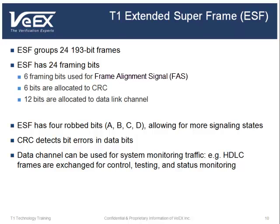For example, HDLC frames, or high-level data link control frames, are exchanged for control, testing, and status monitoring. The ESF has a set of four robbed bits — A, B, C, and D — allowing for more signaling states. Note that for the ESF, the framing is no longer a low probability sequence of 0s and 1s. The receiver will simply synchronize on the frame alignment signal and CRC fields, since the probability of finding matching FASs and CRCs in the frame is low. Finding these fields allows for synchronization.